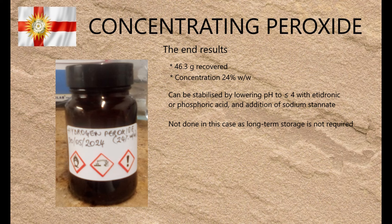If you're planning to store your newly concentrated peroxide for long periods, it's best to acidify it to pH 4 or less using etidronic or phosphoric acid, then stabilise it with 0.1% sodium stannate. Since I'd be using this straight away I didn't bother, and I just put it in the fridge — also I didn't have any sodium stannate or etidronic acid to hand. I actually learned this lesson in a professional setting: I used to work in the R&D department of a manufacturing firm that produced peroxide creams for hair dyeing among other things, and that job was a whole education in itself.